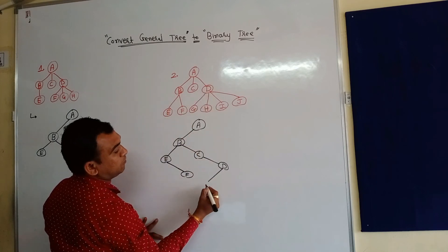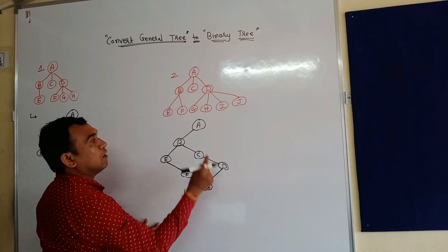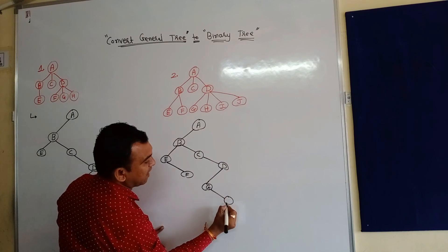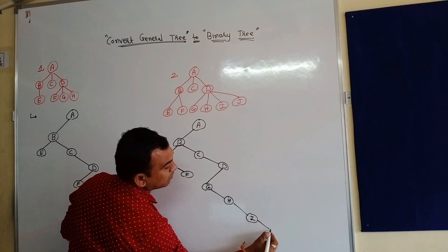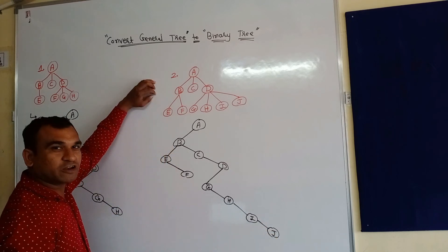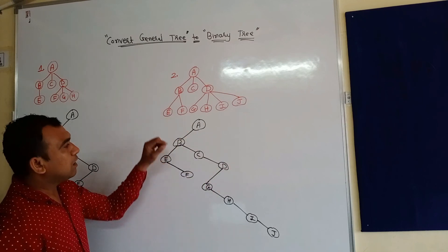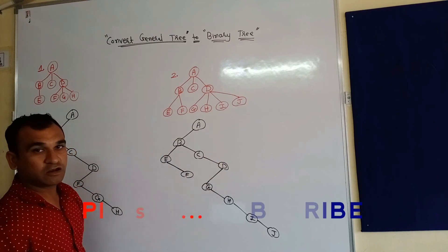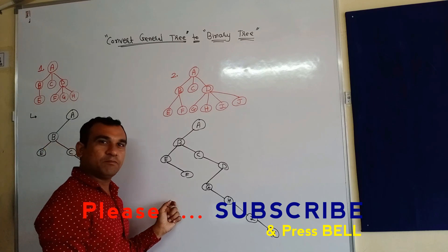G is the left child of D, and the remaining nodes will be right nodes of each other: G's right is H, H's right is I, and I's right is J. So this general tree is now converted into a binary tree. In this resulting tree, any node has at most two children, confirming it is indeed a binary tree.